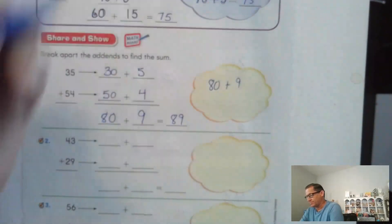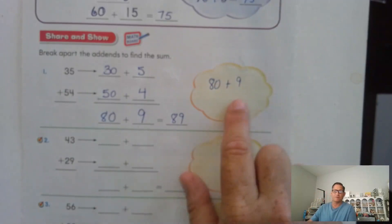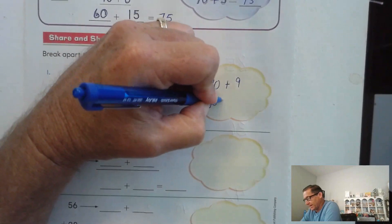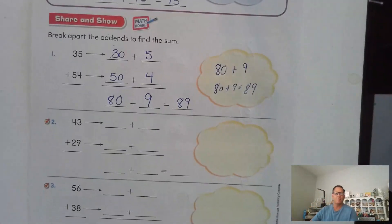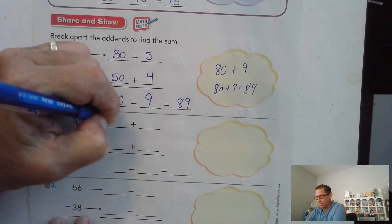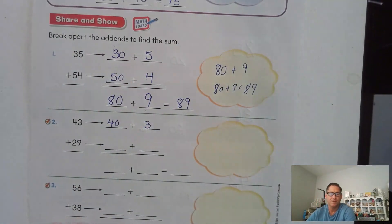And here, if we were breaking this apart, there's no reason to break apart 9. Just 80 plus 9. So 80 plus 9 is 89. 43. Well, you should break that into 40 and three more for ones. Add the tens and 29.